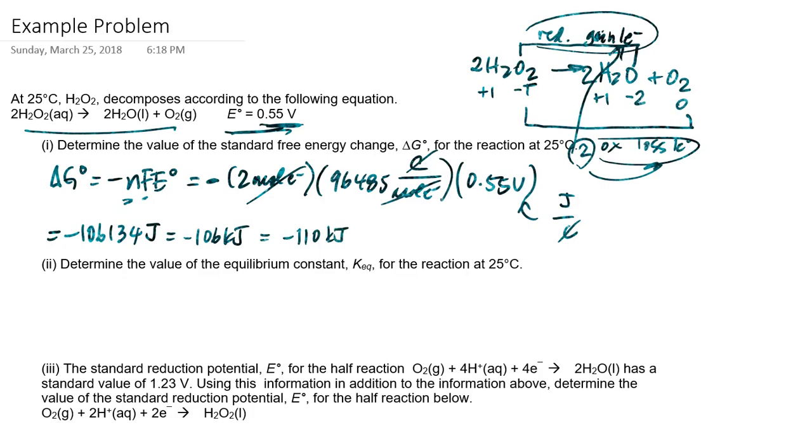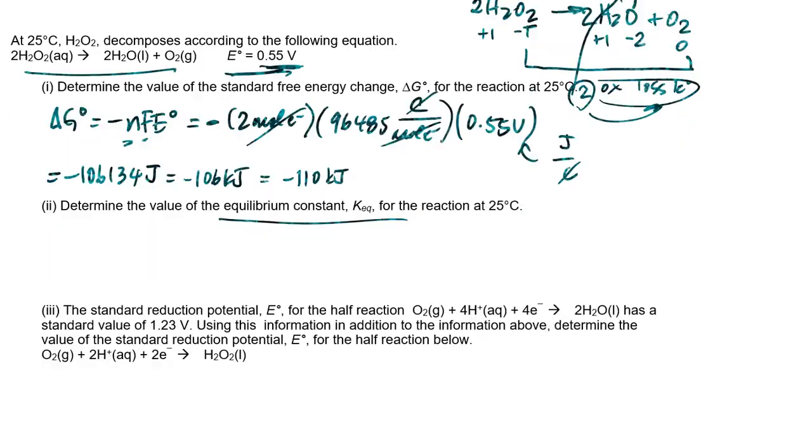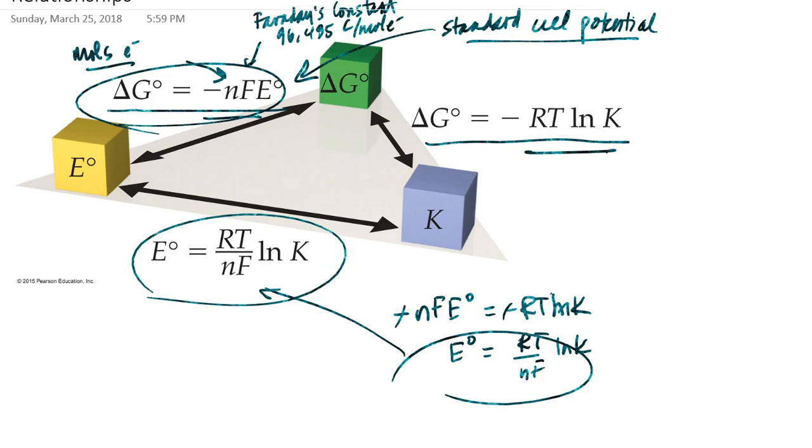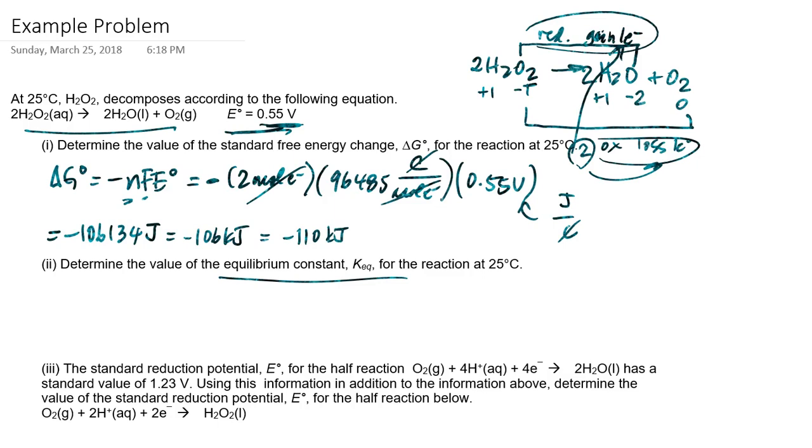Now, suppose that I need to calculate in the next part the value of the equilibrium constant. Well, if I want to do that, then basically what I should look to do is use this relationship solved for the equilibrium constant. And so basically, if I do that, I'll leave the algebra to you, but I would get K is equal to e to the nFE over RT.